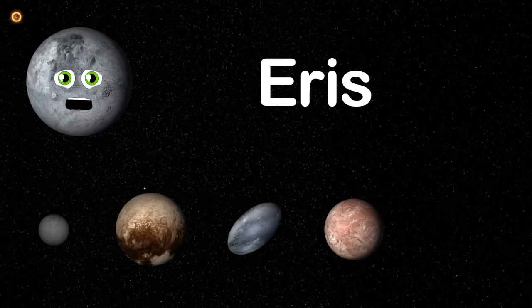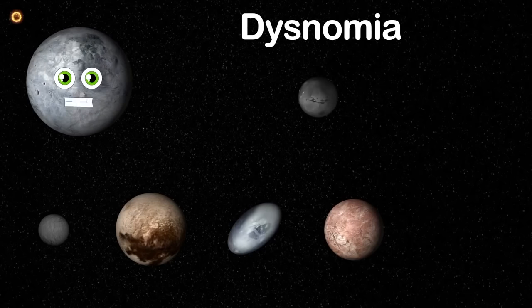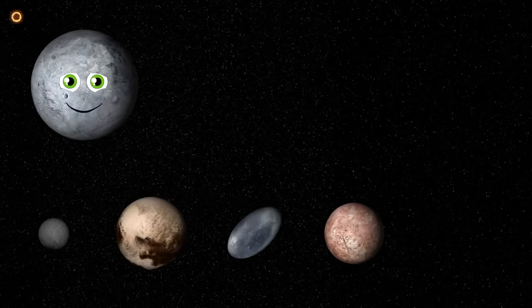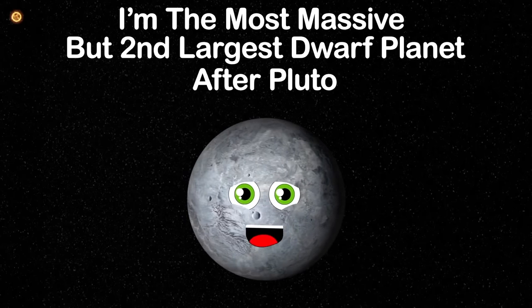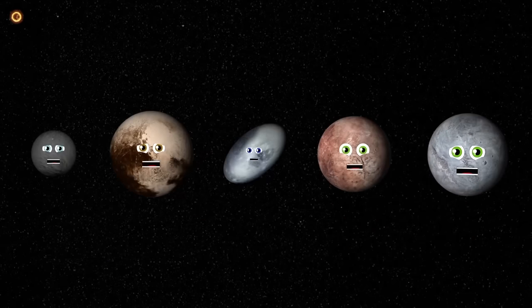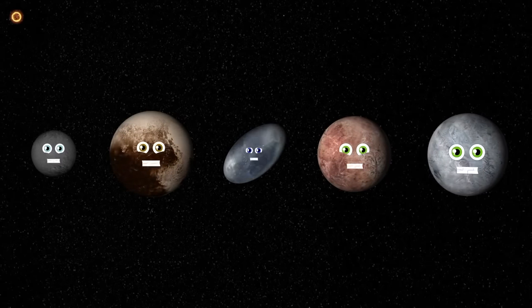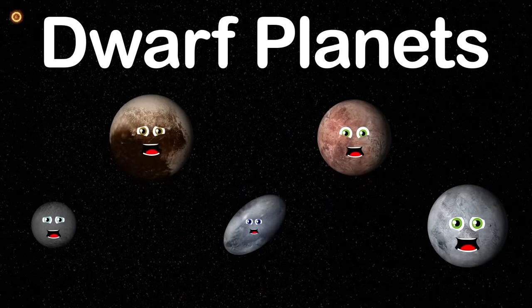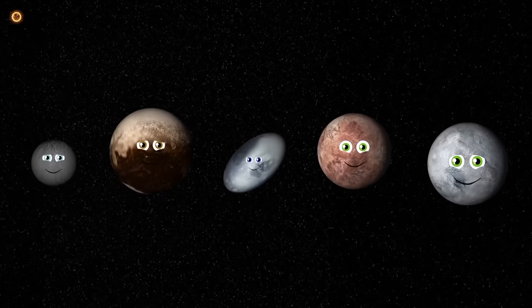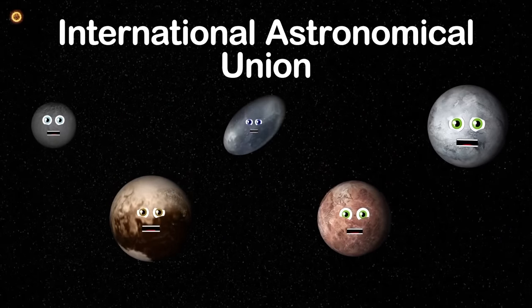My name is Eris — I'm in the Kuiper Belt, the fifth dwarf planet from the sun. I have one known moon named Dysnomia, whose orbit lasts about 16 days. I'm the most massive but second largest dwarf planet after Pluto in the solar system. If you want to learn more about each dwarf planet individually, watch all of Kids Learning Tube's planet videos.